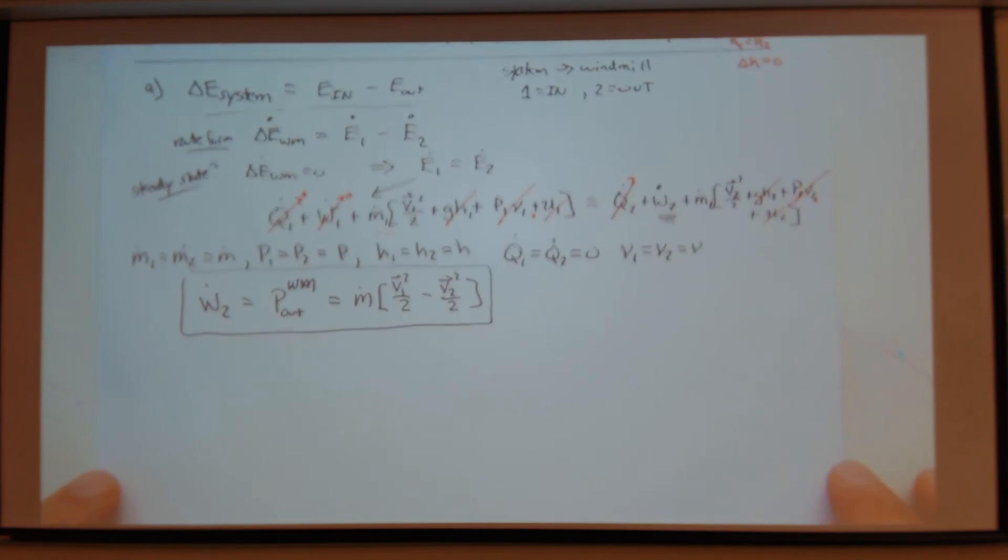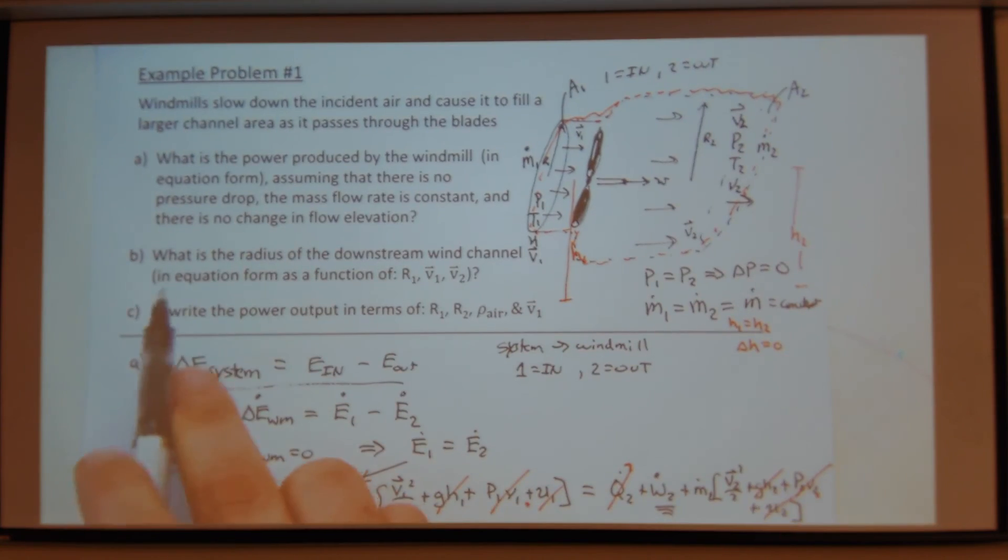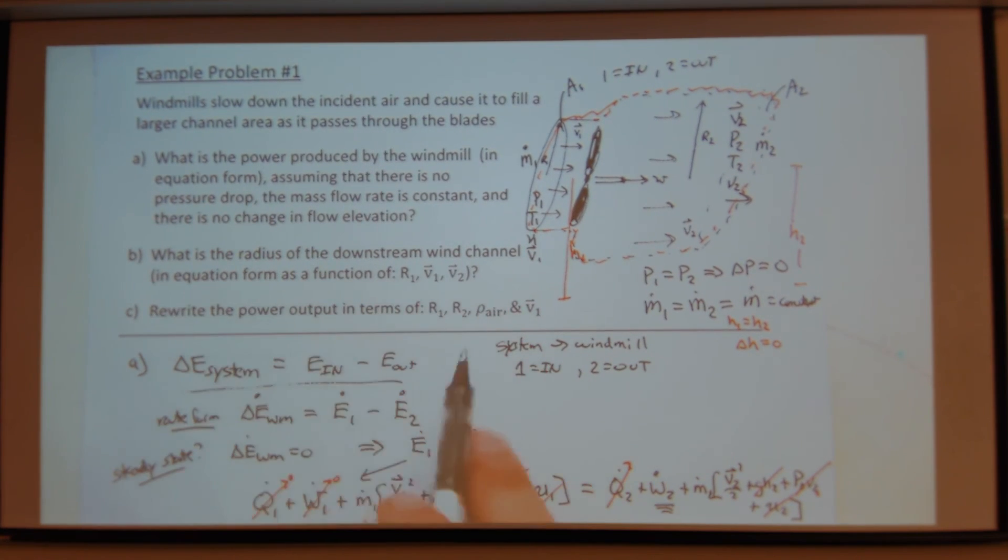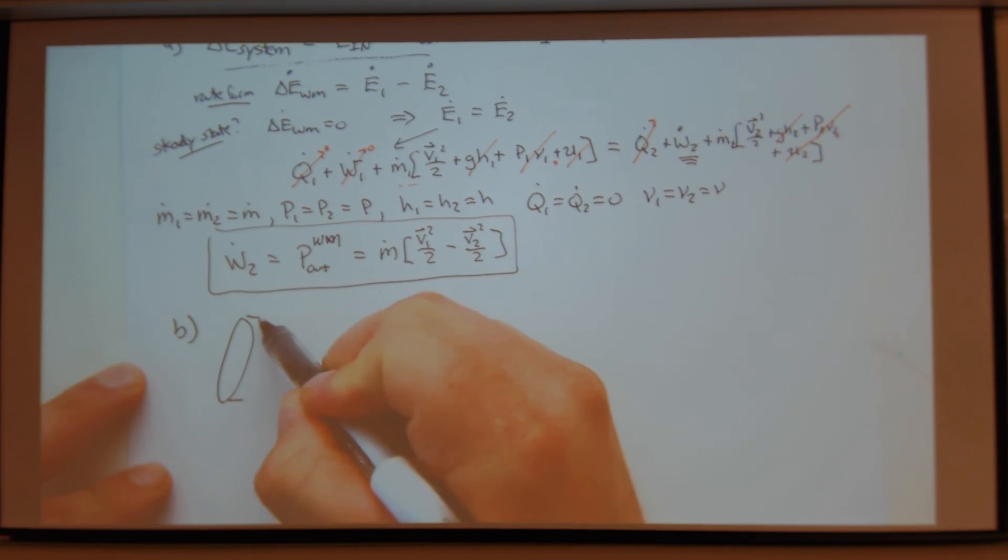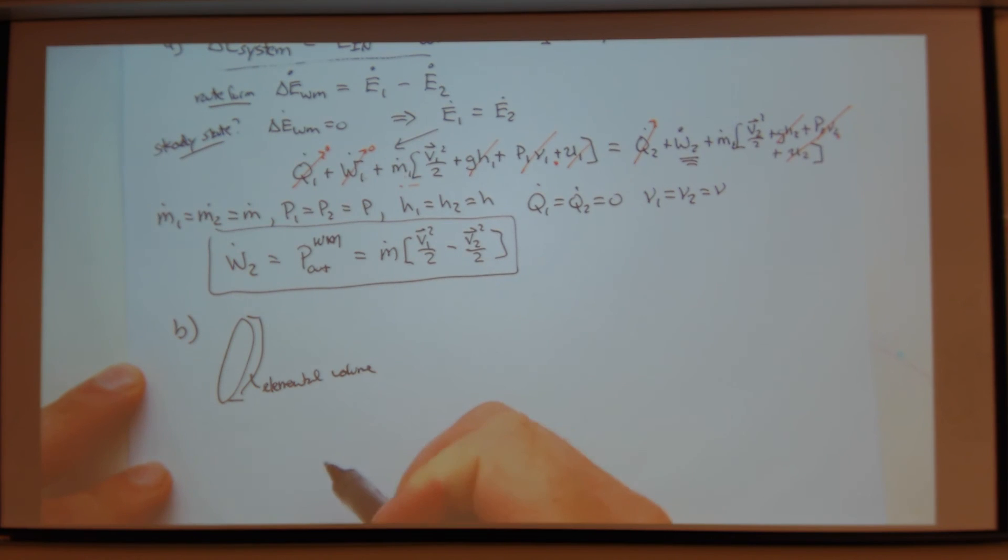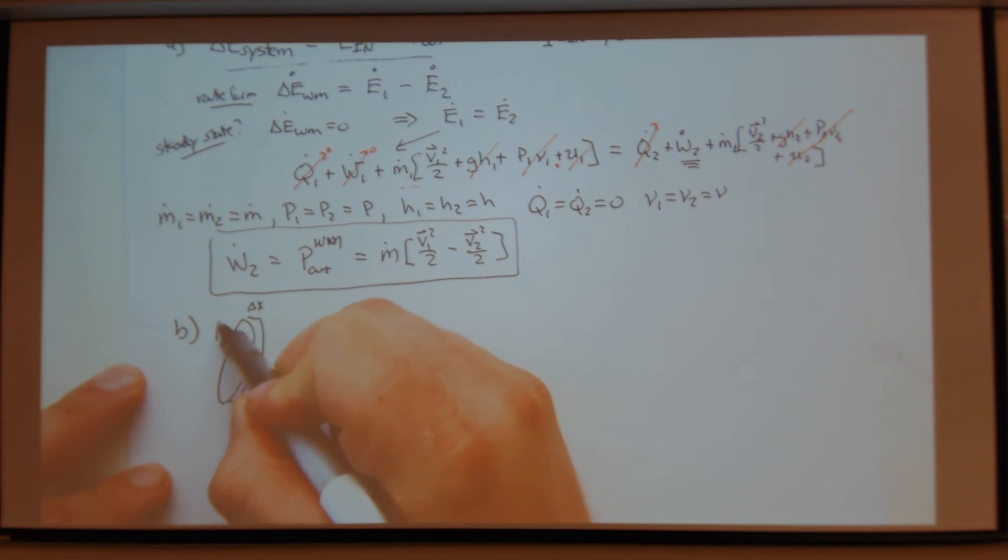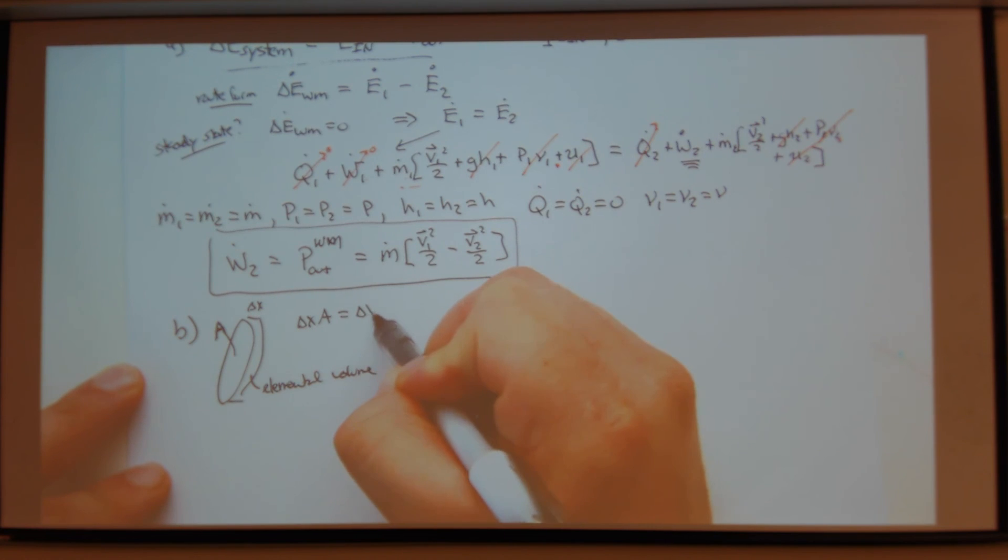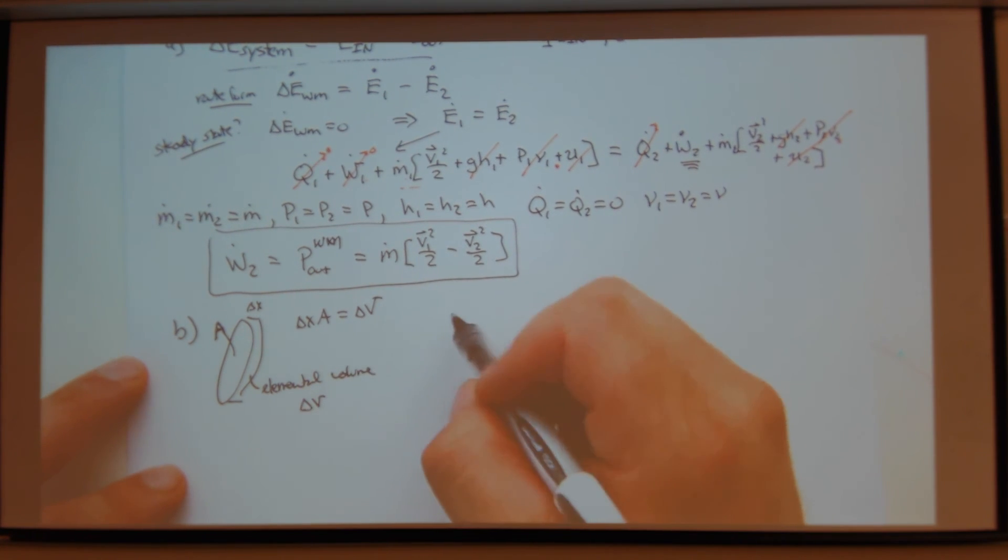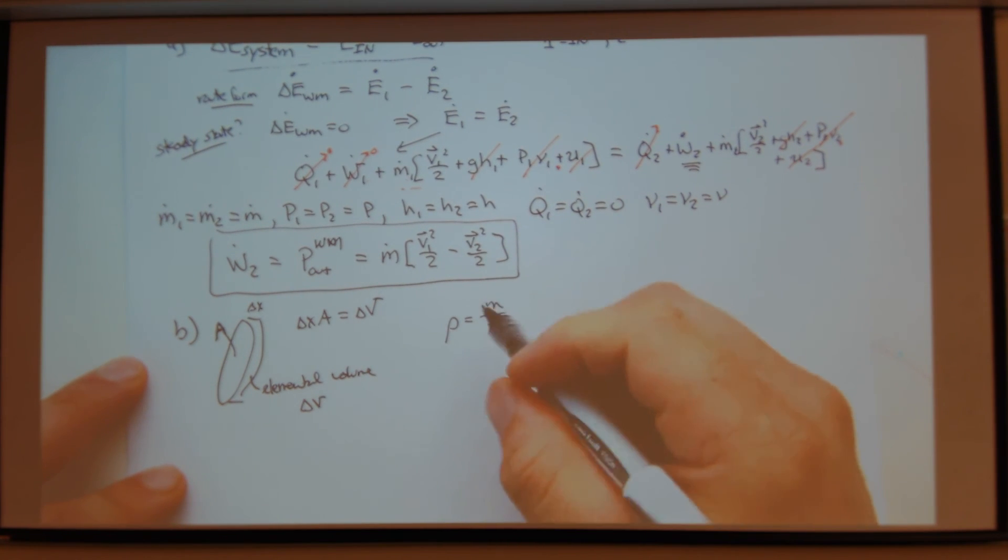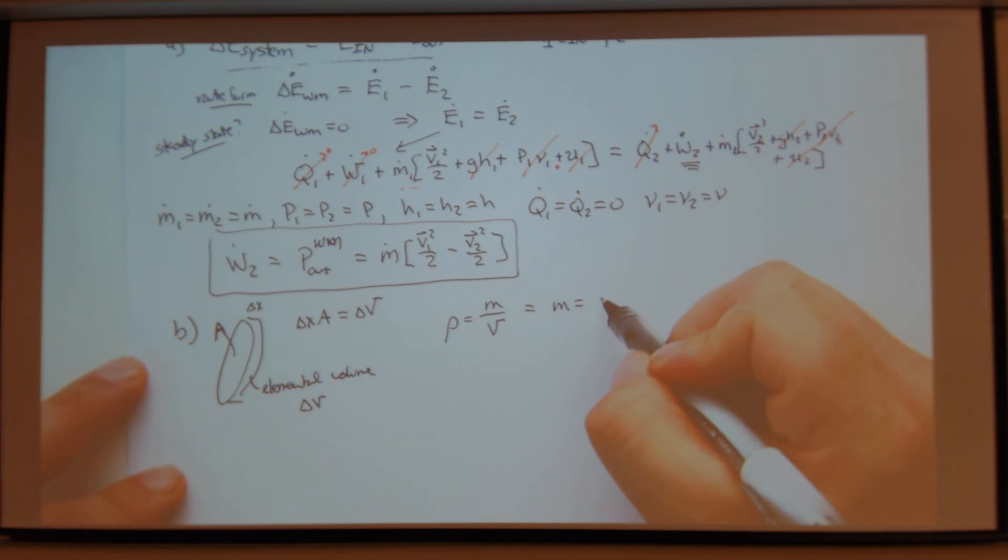So I think we, maybe we can do B real quick. So what is the radius of the downstream wind channel in equation form? Okay? So to do this, we have to consider an elemental area or elemental volume. So I have some delta x and some cross-sectional area. Delta x times A equals my elemental volume, delta V.